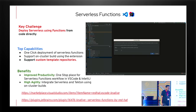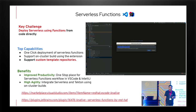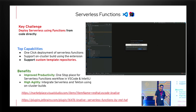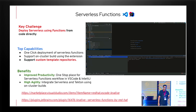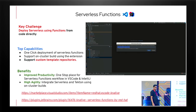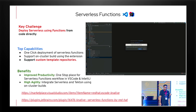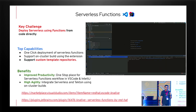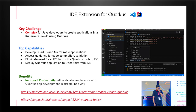Serverless functions are also incorporated into our developer tools with the same workflow as OpenShift. If you want to create serverless functions or deploy an application in a serverless way, there is a VS Code and IntelliJ extension available on the marketplace. You can download it from the VS Code Marketplace or JetBrains Marketplace — the link is available on the slide. The idea is to provide full support around serverless as well.